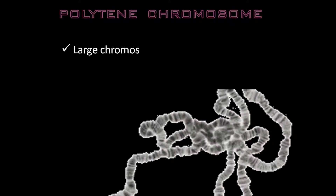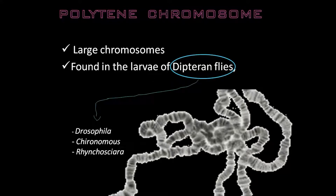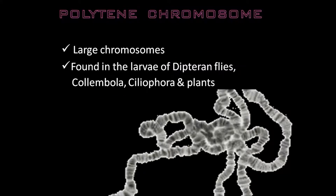This polytene chromosome is a large chromosome. These are mainly found in the larvae of dipteran flies. Examples include Drosophila, Chironomus, and Rhynchosciara. They are also found in other insects like Collembola, and in protozoa such as Ciliophora. They are also seen in plants — specifically in antipodal cells of angiosperm plants and in endosperm polytene chromosomes.